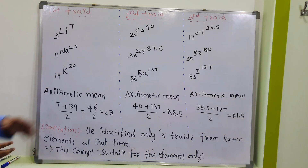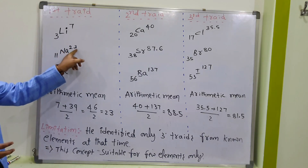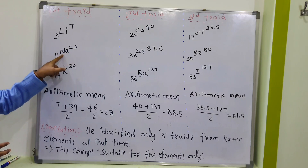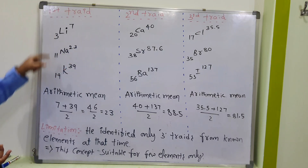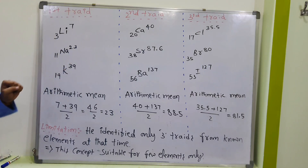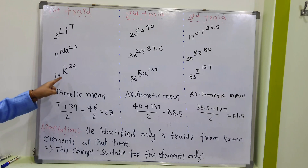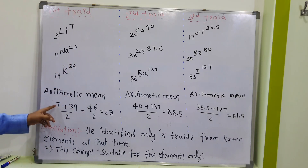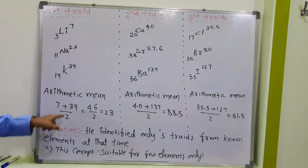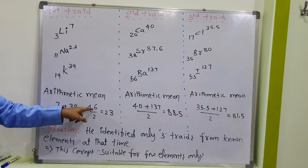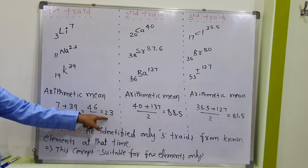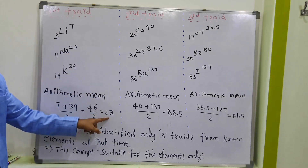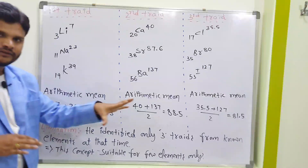When you look at the first triad — lithium, sodium, potassium — sodium's atomic weight is 23, which is the middle element. Let us check: lithium is 7 and potassium is 39. The arithmetic mean is (7 + 39) / 2 = 46 / 2 = 23. So the average is 23, which matches sodium's atomic weight exactly.